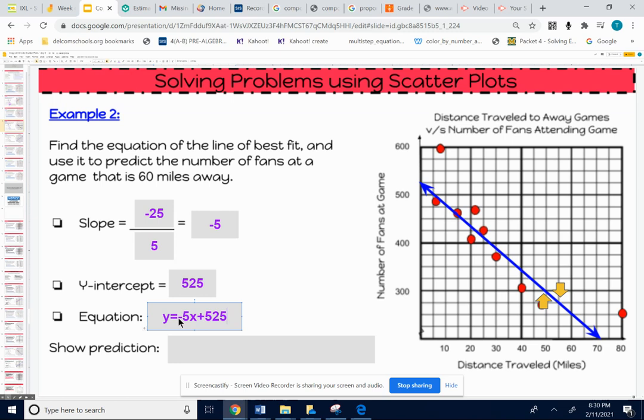Now we're going to predict the number of fans 60 miles away. We've got to be careful we're putting the 60 in the right place. Miles is on the x-axis, so they're giving us x is 60. They're asking us for the number of fans. The number of fans is on the y-axis. So they're giving us x is 60, they're asking us for y. We're going to take this equation, put 60 in for x because that's what they're giving us, and solve it for y. We're just going to type this out as y equals negative 5 times 60 plus 525.